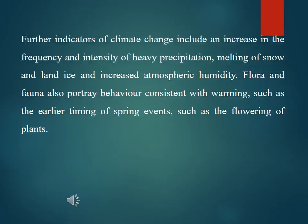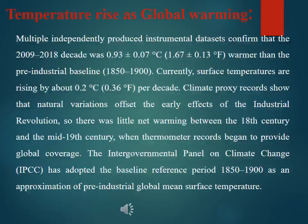Further indicators of climate change include an increase in the frequency and intensity of heavy precipitation, melting of snow and land ice, and increased atmospheric humidity. Flora and fauna also portray behavior consistent with warming, such as earlier timing of spring events like the flowering of plants. Multiple independently produced instrumental datasets confirmed that the decade 2009 to 2018 was 0.93 ± 0.07 degrees Celsius warmer than the pre-industrial baseline of 1850 to 1900.